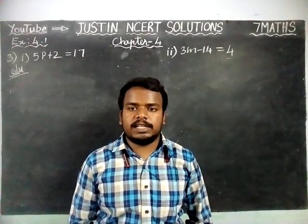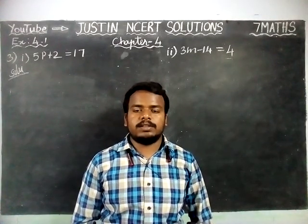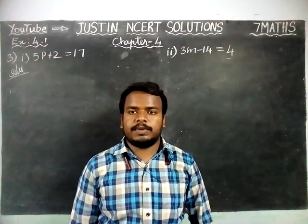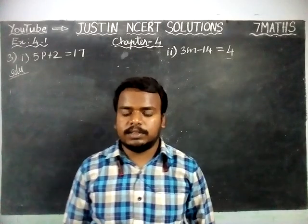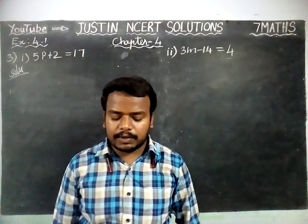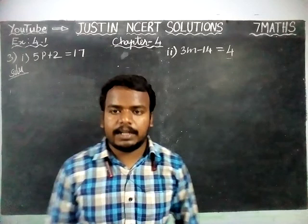Hi students, welcome to Justine's MCRD Solutions. In this video, we are going to see 700 Maths Chapter 4 Exercise 4.1 Third Question. The question is: solve the following equations by trial and error method.